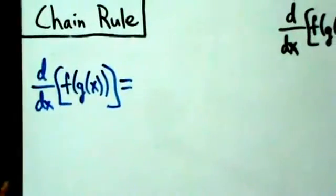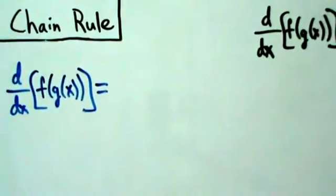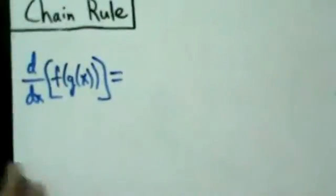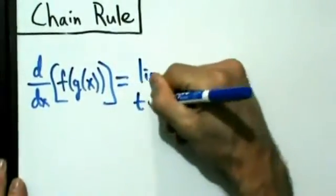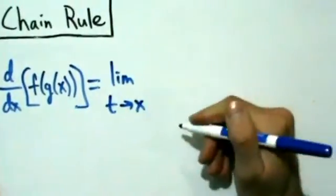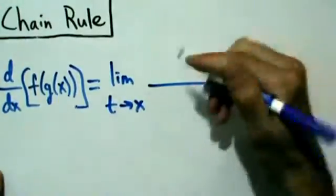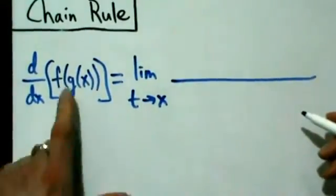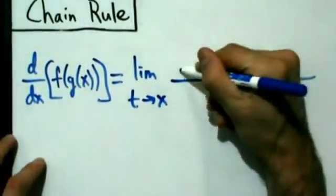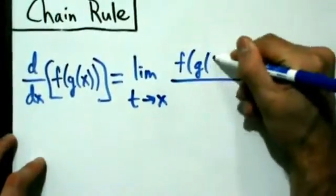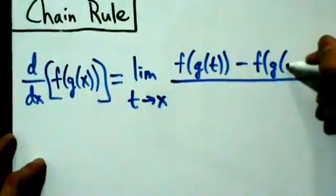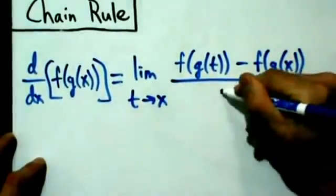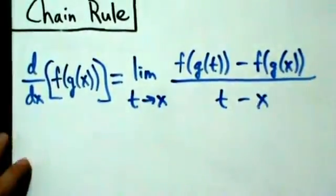We're just going to use the alternate definition of the derivative. So that's going to be the limit as t approaches x of — straight from the definition — f(g(t)) minus f(g(x)), all over t minus x.